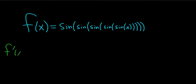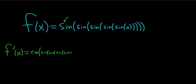So let's take the derivative. We obviously have to use the chain rule. The derivative of a sine is cosine. So we're taking the derivative of the outside, and then we're not going to touch the inside piece. So the derivative of sine is cosine, and we leave the inside alone — that's going to be sine of sine of sine of sine of x. I'm not going to put the parentheses there on that last x just to make it a little more clear.